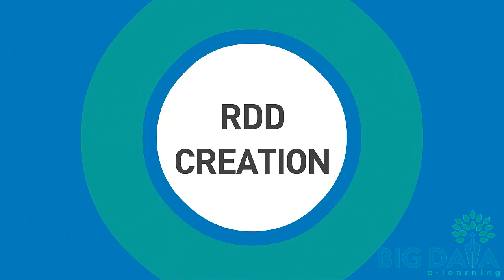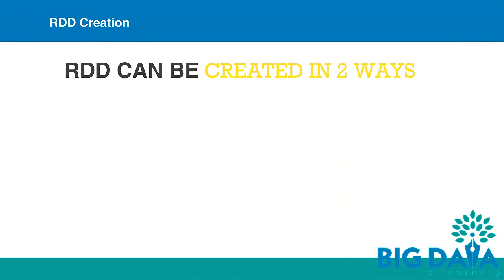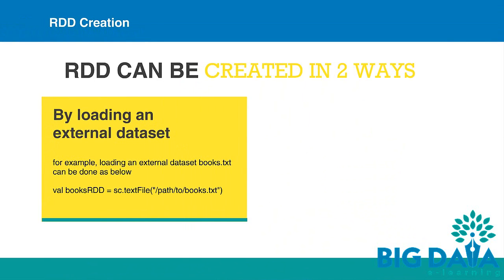RDD creation. There are two ways to create an RDD. One way is by loading the external data set. For example, if there is a data set books.txt and we need to create an RDD on that, we can pass the fully qualified data set name within double quotes to the text file method of the spark context object. Then we can assign it to an RDD called books RDD.